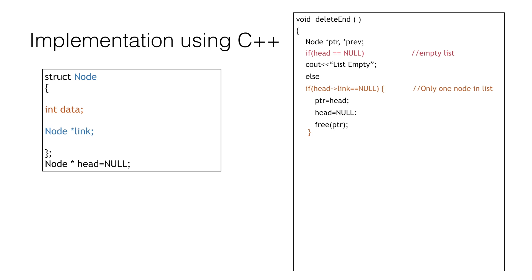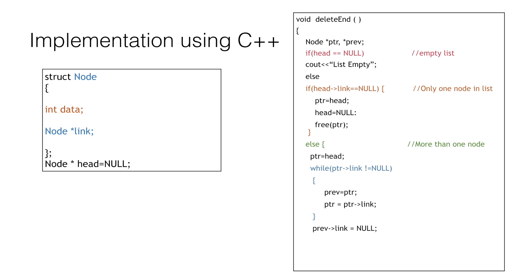If our linked list contains more than one node we follow the same procedure. We equate pointer ptr to head to point to the first element, then traverse the linked list until we reach the last node whose linked part is null, keeping track of the previous node using priv. When we reach the last node, we make the link part of the second last node as null, and in the final step we delete the last node using free(ptr). Thus we have successfully deleted the last node from the linked list.